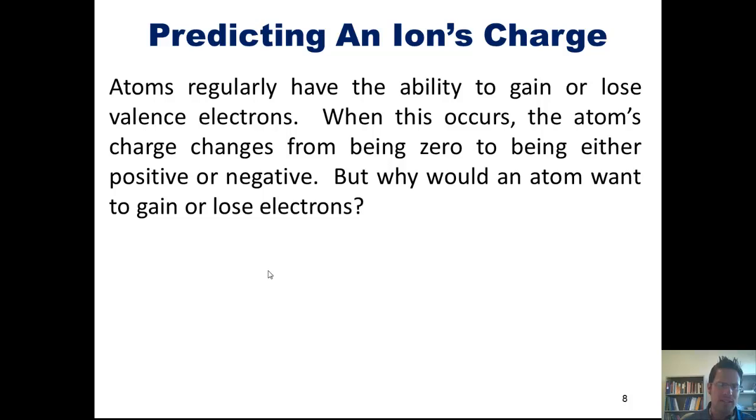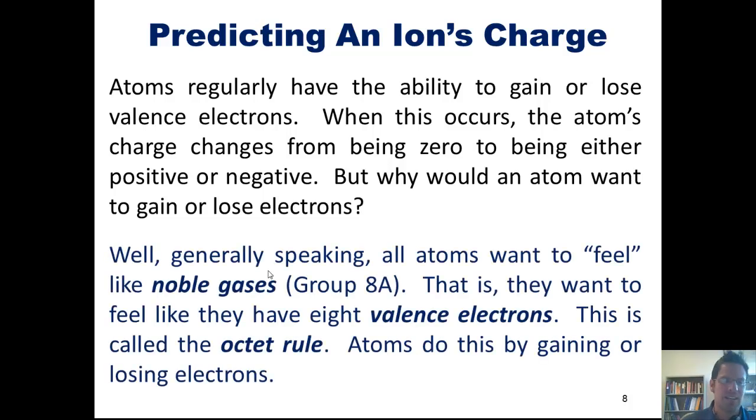But why would an atom ever want to lose or gain electrons? Well, generally speaking, all atoms want to feel like noble gases, that is, the elements that are found in column 8A. They want to feel like they have 8 valence electrons. This is called the octet rule.